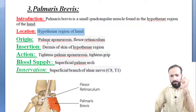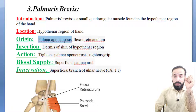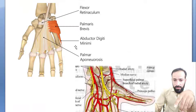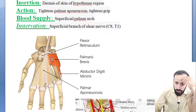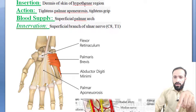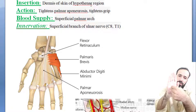Palmaris brevis gets its origin from the palmar aponeurosis and from the flexor retinaculum. Here you can see the flexor retinaculum, and palmaris brevis gets its origin from here.